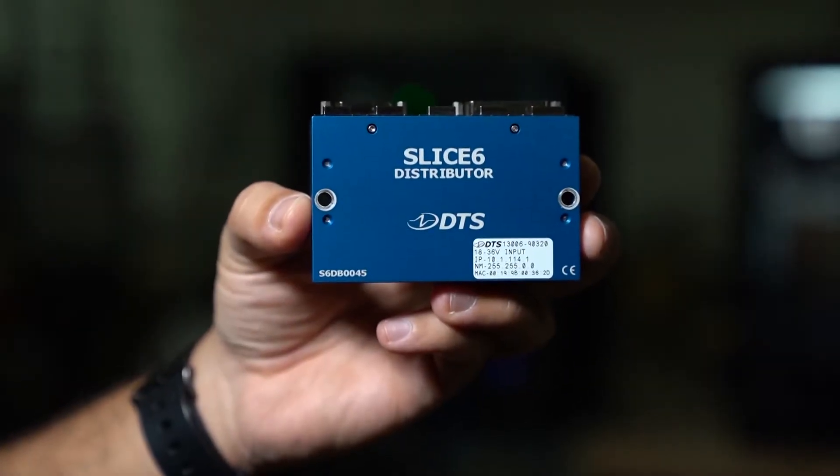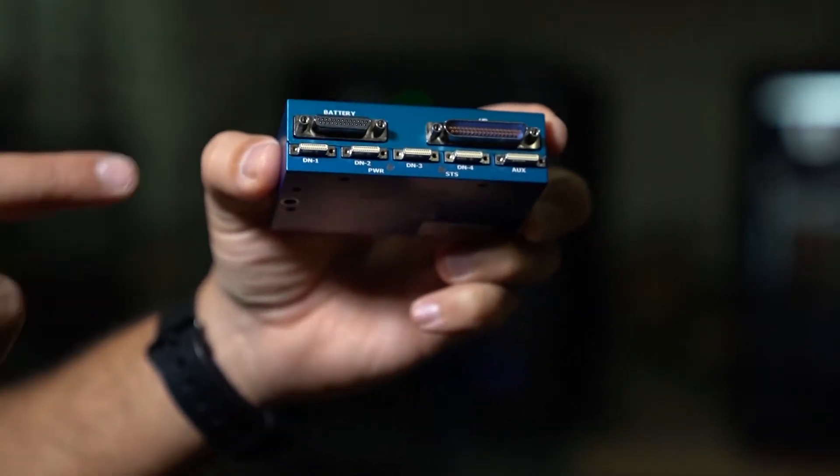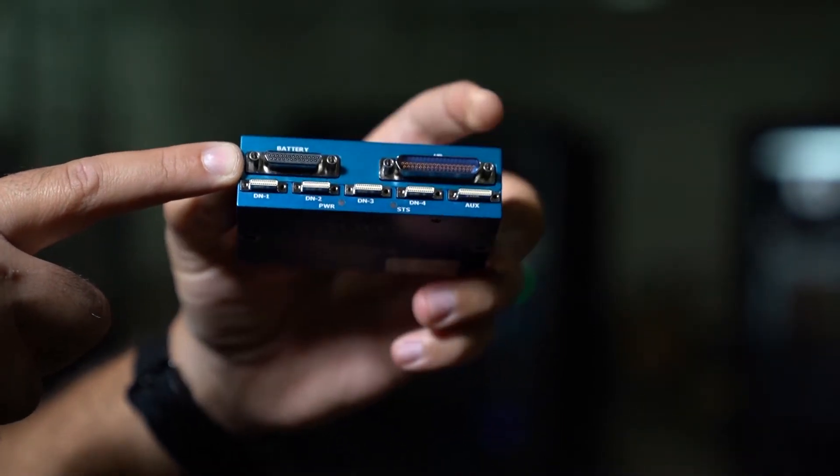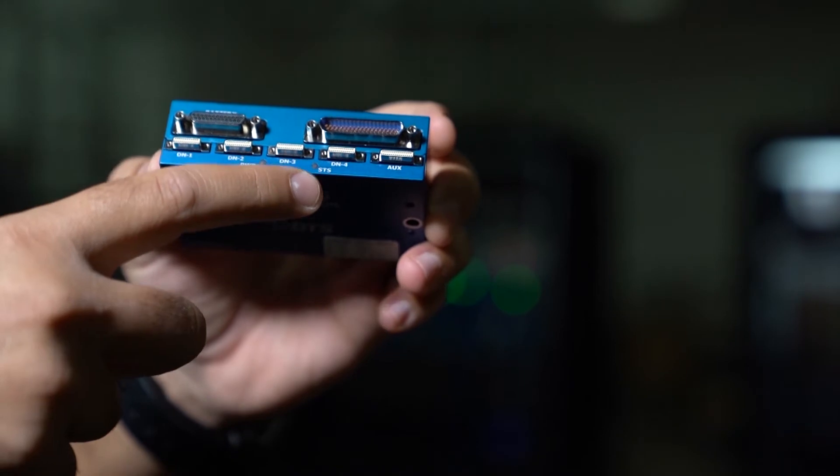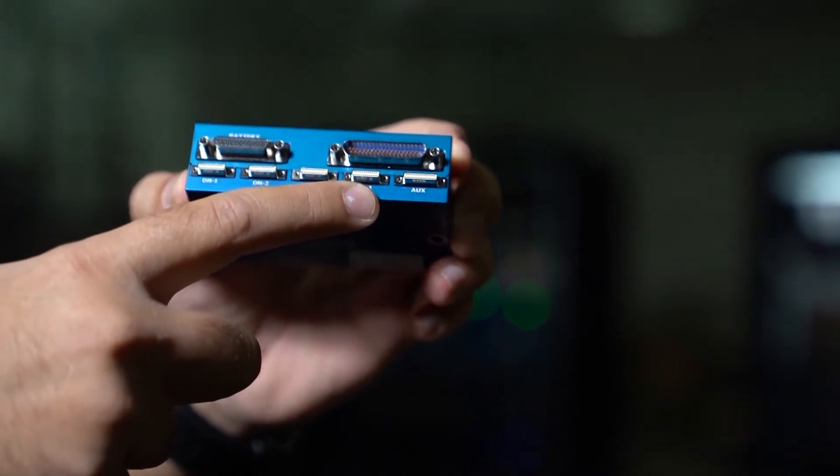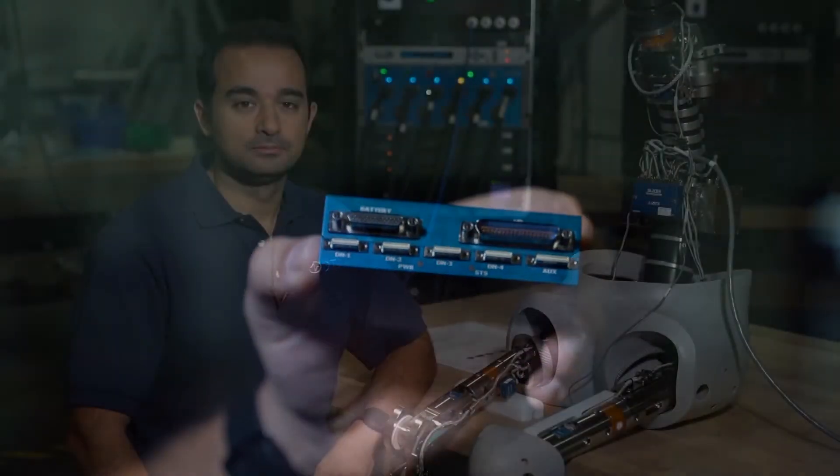This is the Slice 6 distributor. It's the main distribution unit for each individual ATD. On the top, you have your battery connector that goes to your backup battery power. The up connector goes to your exit cable, and then you have four down connectors that go to each chain of the ATD. The auxiliary connector allows you to plug in the temperature sensors and the external LED indicator.